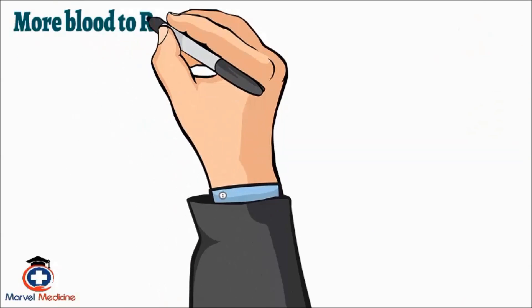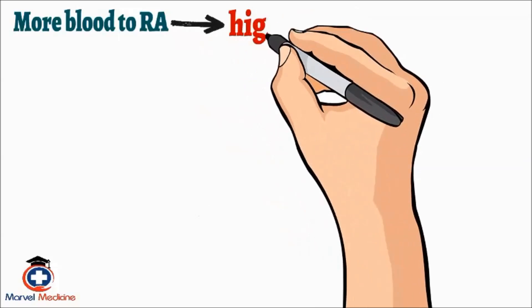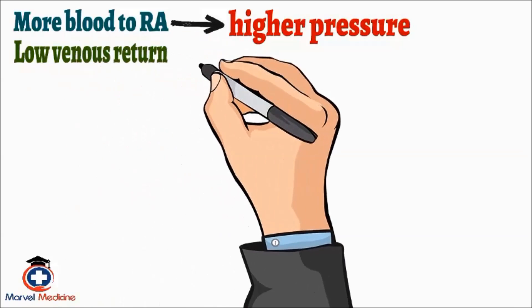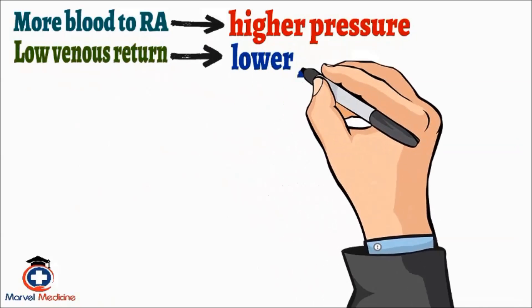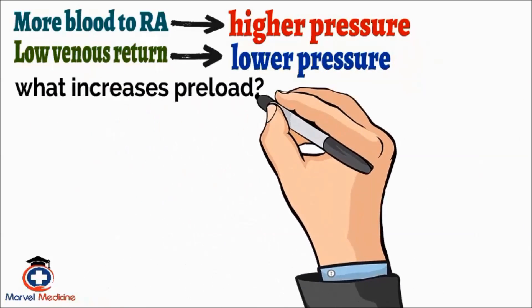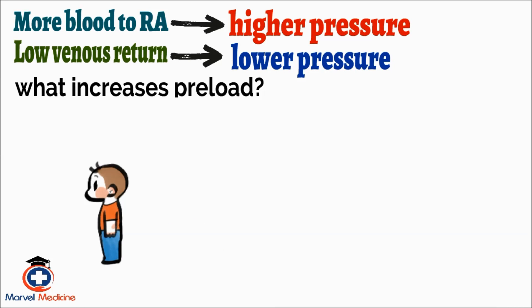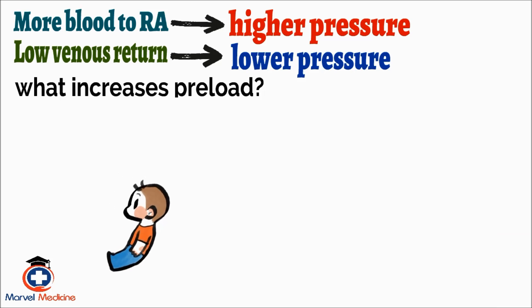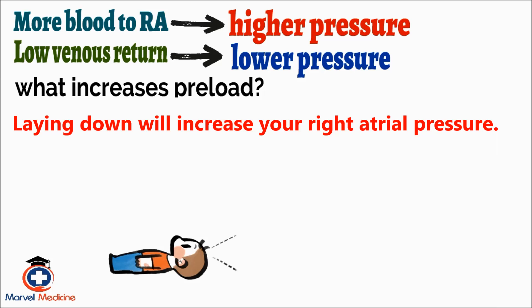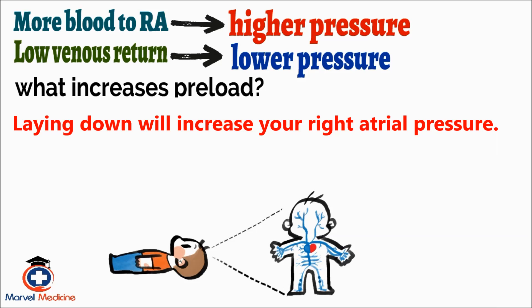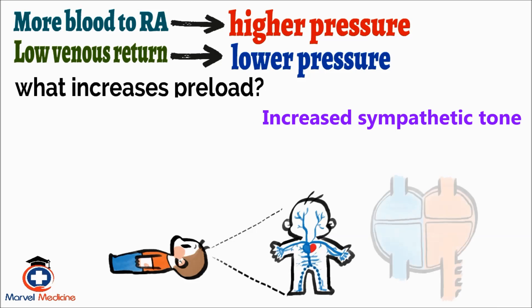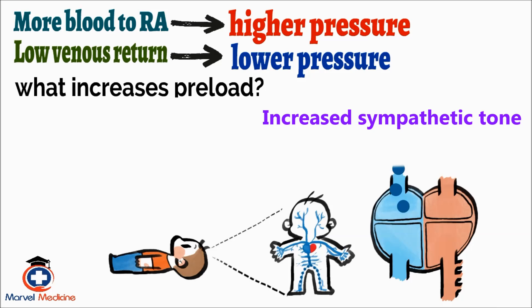The second thing that determines right atrial pressure is how much blood is coming into it — basically, preload and venous return. So what increases preload? Things like laying down, for example — being supine. Being supine eliminates the effect of gravity on your vascular system, so laying down will increase your right atrial pressure. Increased sympathetic tone and contraction of those vessels sending blood back up also does it.